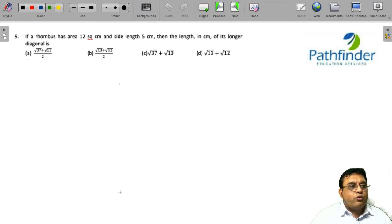CAT 2021 Slot 2, Question Number 9: If a rhombus has an area of 12 square centimeters and side length of 5 centimeters, then the length in centimeters of its longer diagonal is? This question requires knowledge of both geometric properties and identities. Identities is something you should be very good at if you are writing the CAT quant exam. That is where many engineers score, because in quite a few places you can see that application of identities is there.